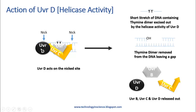Once the nicks are formed, UVRD comes into action. UVRD has helicase activity, which removes the short stretch of DNA from the lesion region. The thymine dimer region is removed out by the helicase activity of UVRD. As you can see, the thymine dimer region has been removed.